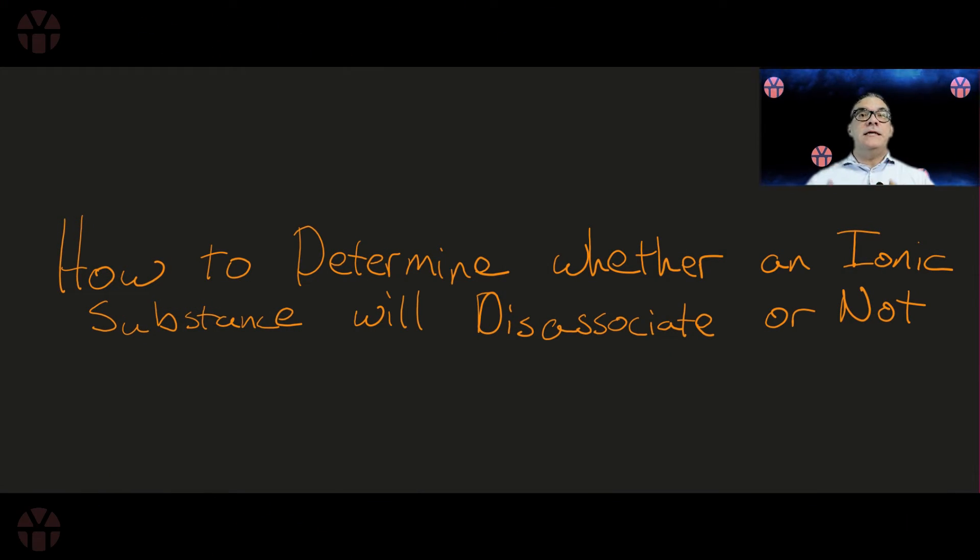Now that we've entered this idea of aqueous solutions or aqueous stoichiometry, the question that we're going to run into is how do we determine whether an ionic substance will dissociate or not? Let me rephrase that: how can I determine whether an ionic substance will dissolve or not? Will it break apart in water?